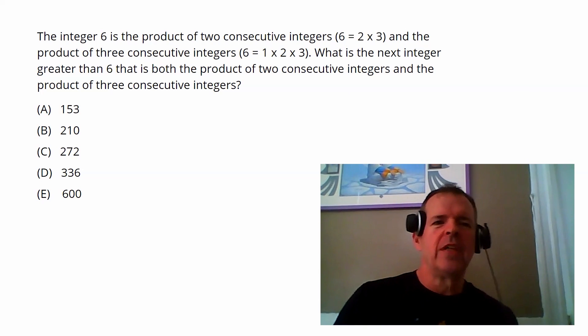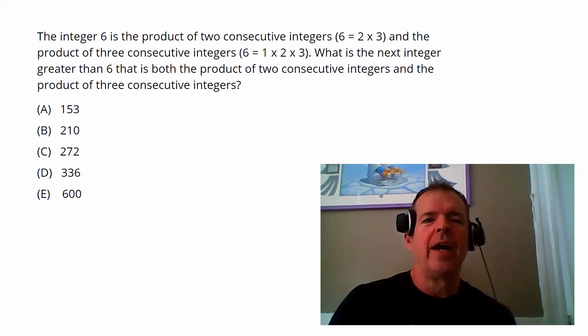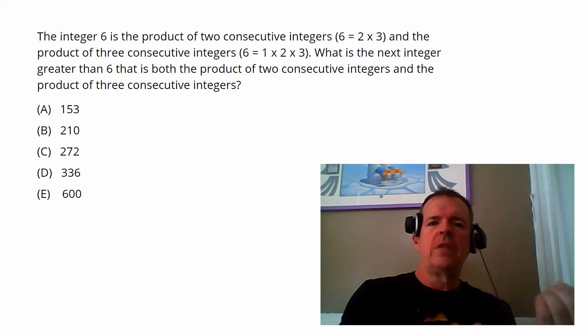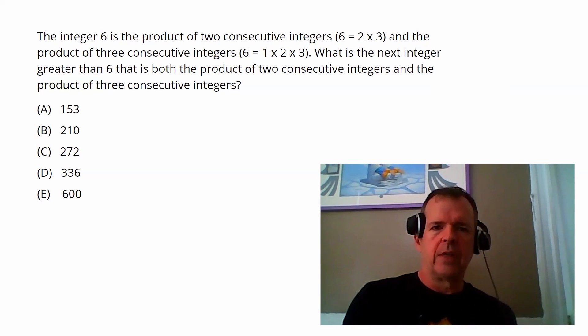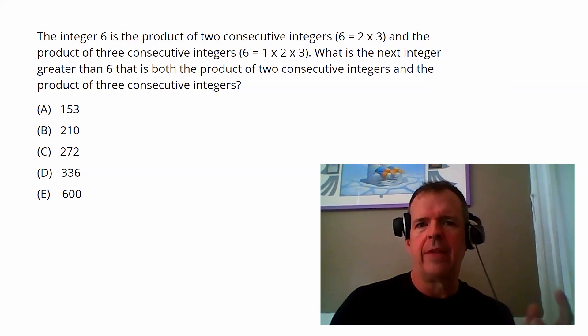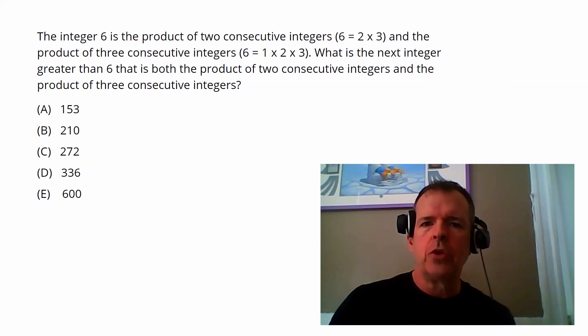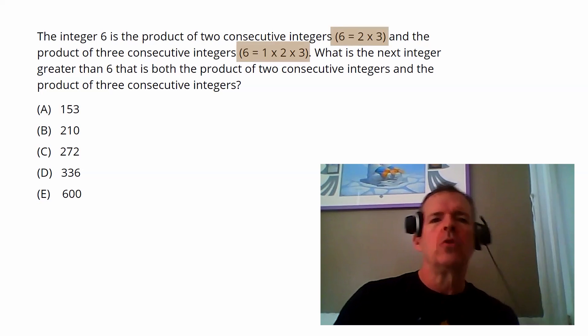All right, so this question is kind of an interesting one. I like this a lot. They actually set the stage. They give us an example, the integer six, and what they explain to us is six has an interesting property in that it's the product of two consecutive integers, and they nicely write that out for us, and it's also the product of three consecutive integers. And what they go on to ask is, what's the next integer greater than six that has this property?